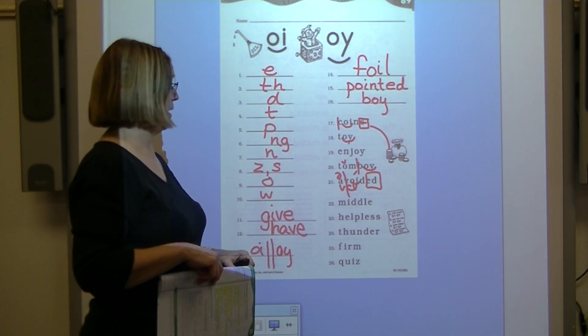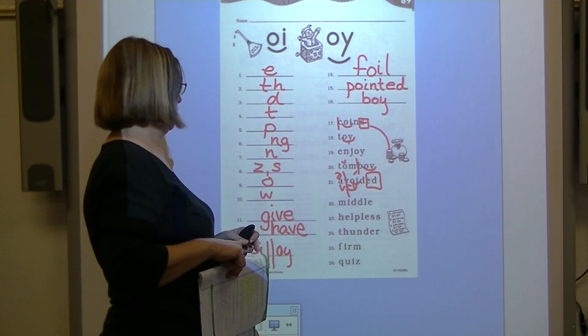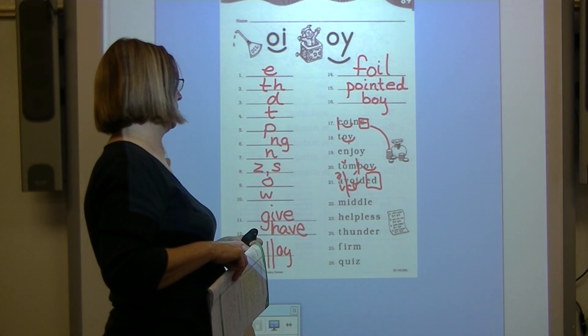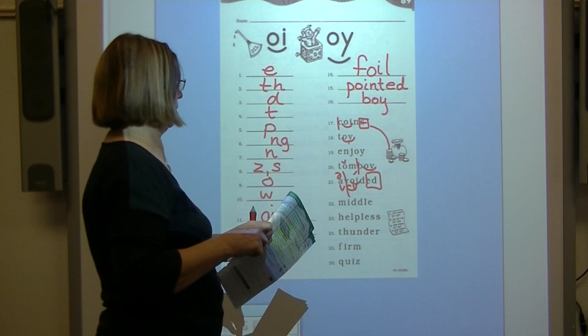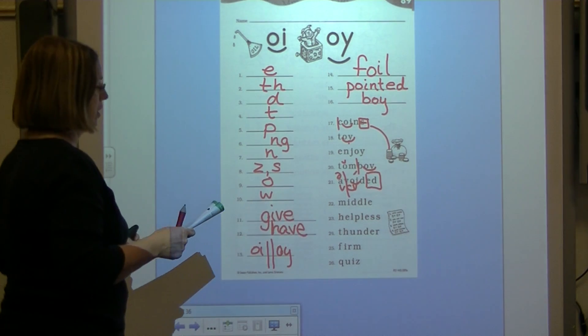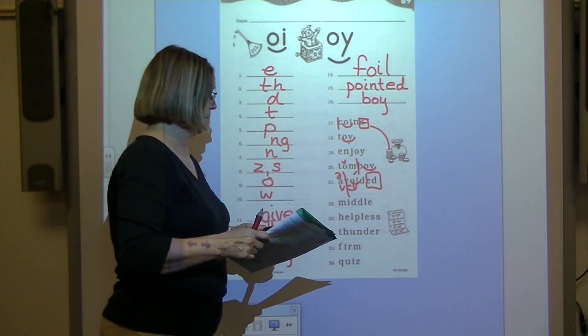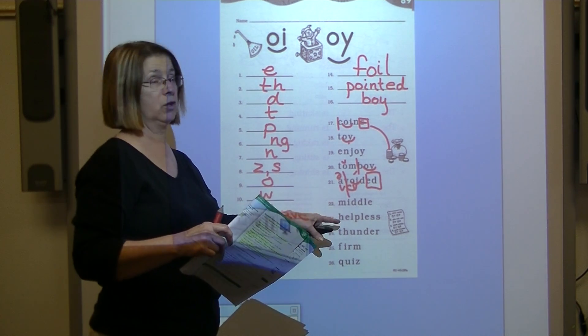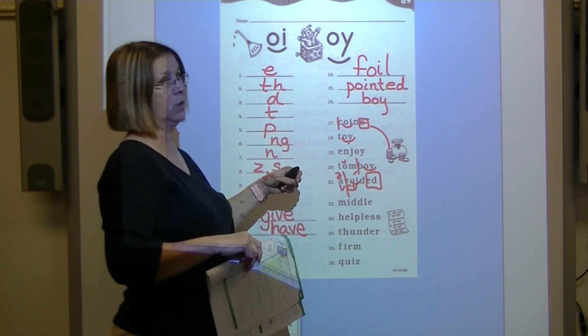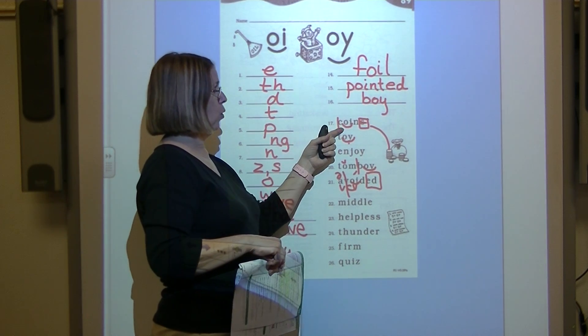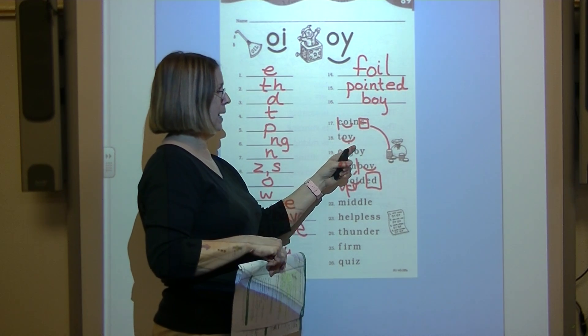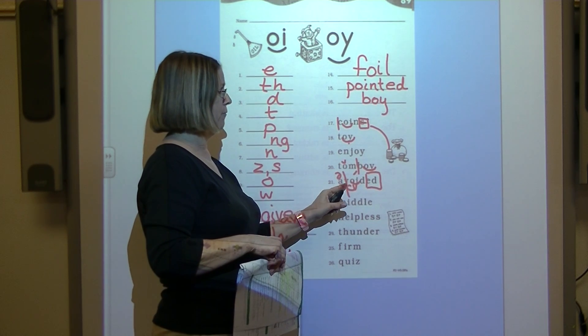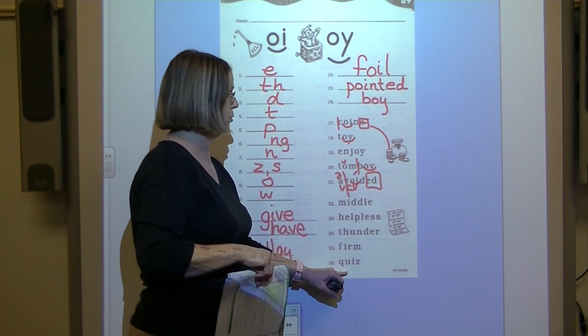I want you to code these five words by yourself. I see one that has a final stable syllable and I see a suffix on one. I see a pattern on one. I want you to go back and read all of them when you finish, all ten of them. So, read these with me now. Coins, toy, enjoy, tomboy, avoided. Then you do these.